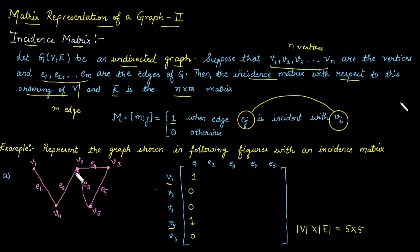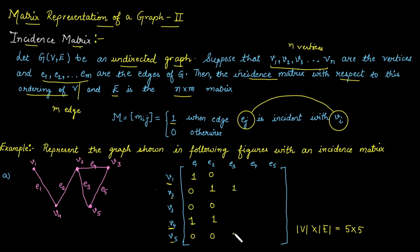Now take the second edge. The second edge is associated with vertices v2 and v4, so those entries are 1 and the rest are 0. The third edge is incident with v2 and v5, so those entries are 1 and the rest are 0. E4 edge is incident with v2 and v3, so the entries corresponding to the second and third rows are 1 and the rest are 0.